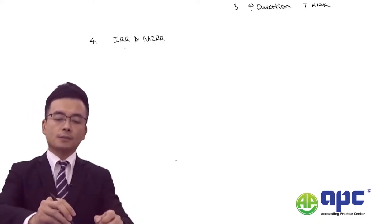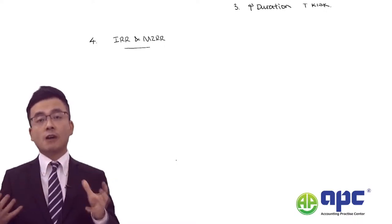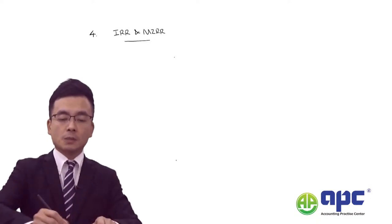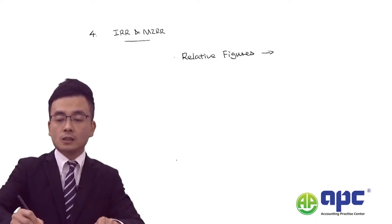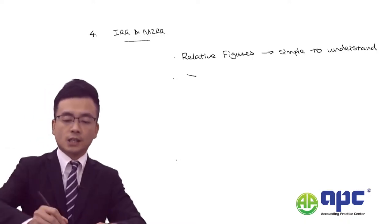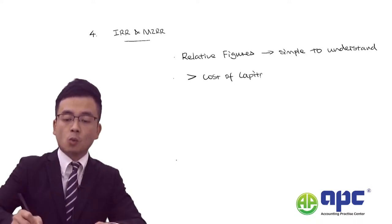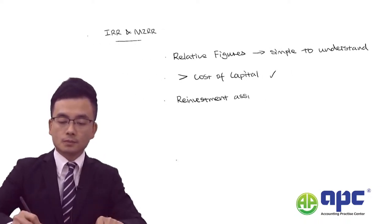For the narrative part, firstly tell the examiner that these are relative figures simple to understand by non-financial managers. Secondly, the decision criteria is whether the MIRR or IRR is greater than the company's cost of capital — if yes, do the project. Thirdly, very importantly, are the reinvestment assumptions.